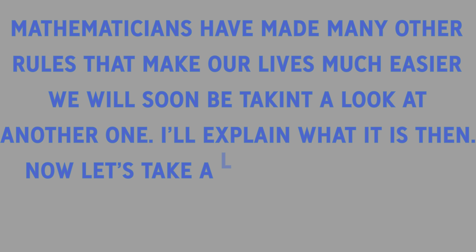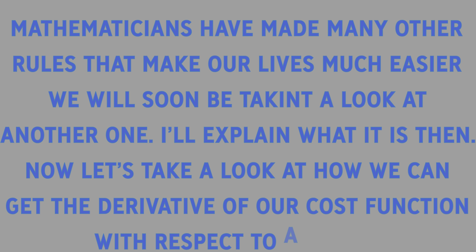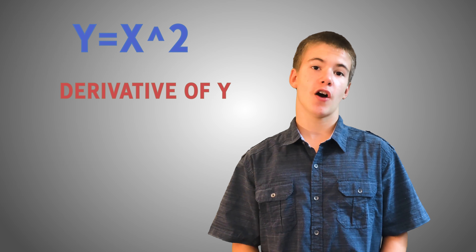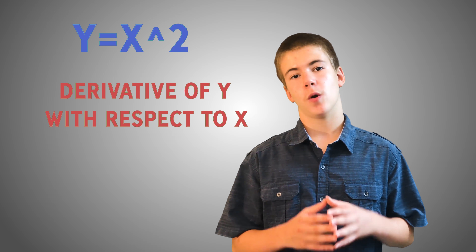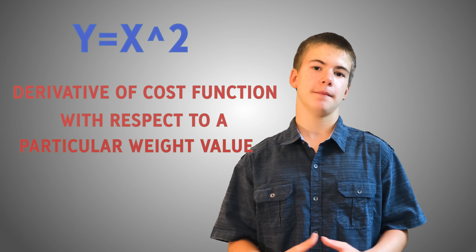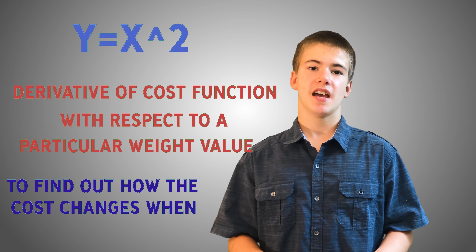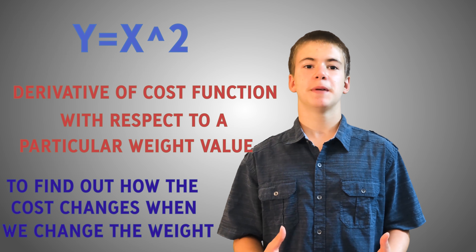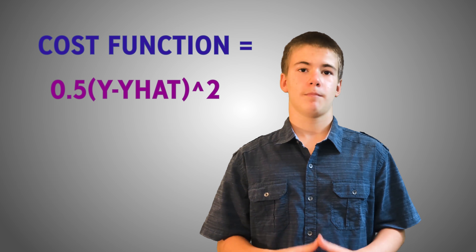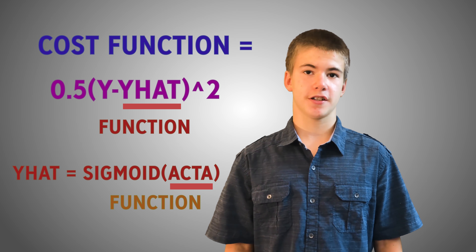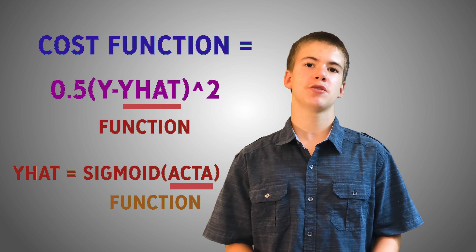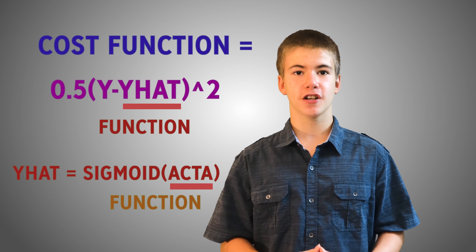Now let's take a look at how we can get the derivative of our cost function with respect to a weight. Before, we were getting the derivative of y with respect to x — calculating the slope for y for any value of x. Now, we will be calculating the slope of our cost function for any value of a particular weight. This is to know how much the cost changes and in which direction when we change a weight. We have defined the cost function as 1 half of y minus y hat squared. But remember, y hat is also a function — we have defined y hat as the sigmoid of act a. Act a is also a function, and so on.